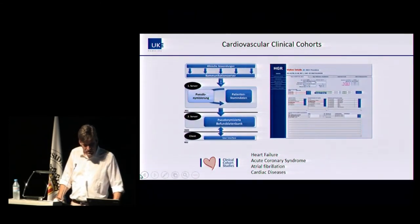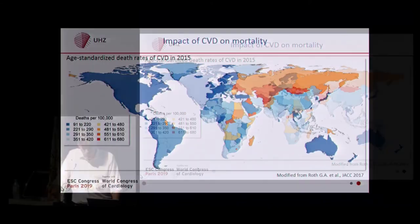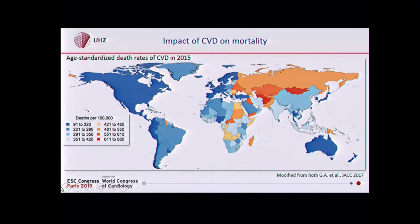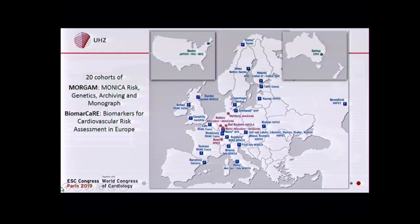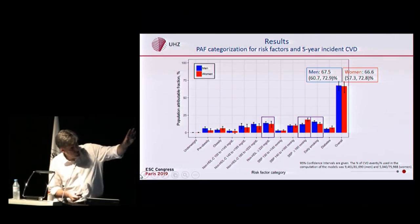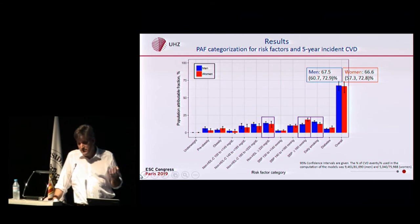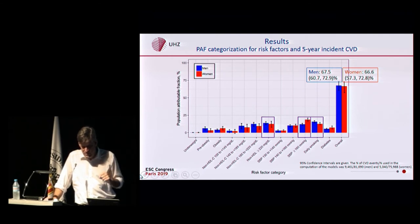In blue, you see the burden of cardiovascular disease and death. Particularly in Europe and the Western world, it is improving. In red, you see the areas worldwide — particularly in Eastern Europe and Russia — where we have a very high burden of cardiovascular disease. This is a pan-European approach. We have 62 to 65% explanation for cardiovascular disease development, leaving a huge remaining space — about 35 to 40% — of unexplained cardiovascular disease.